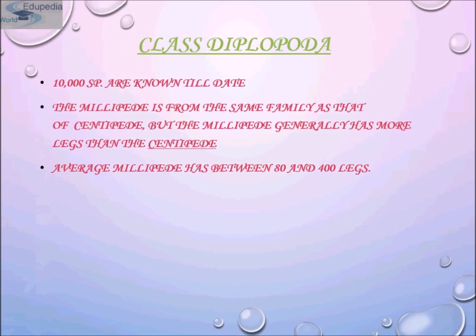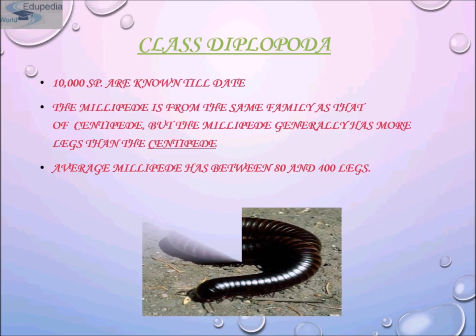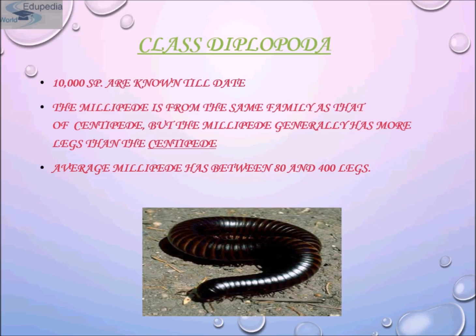Class Diplopoda includes millipedes. Over 10,000 species are known to date. The millipede is from the same family as centipedes but generally has more legs. While centipedes have no more than about 50 legs total, the average millipede has between 80 to 400 legs. The millipede is a medium to large-sized invertebrate found in rocks and decaying logs all around the world, with a long narrow body made up of segments.